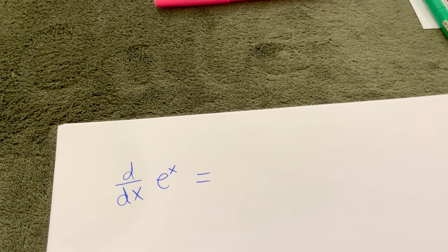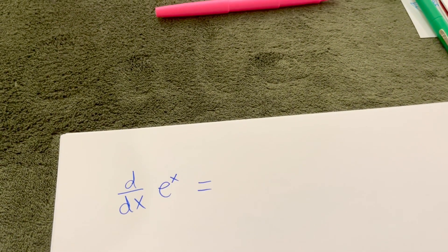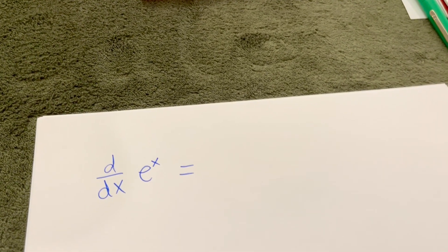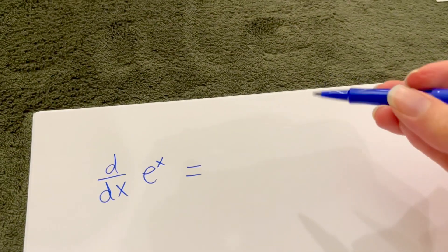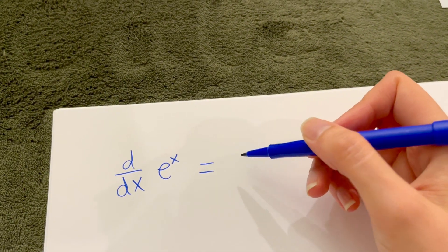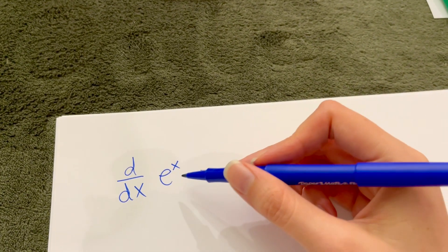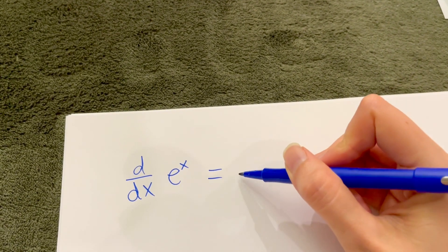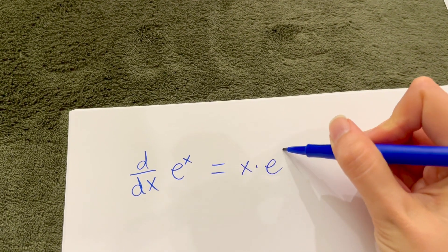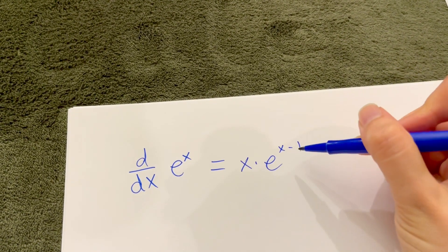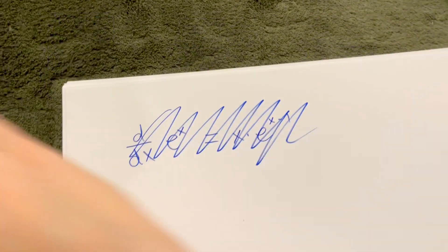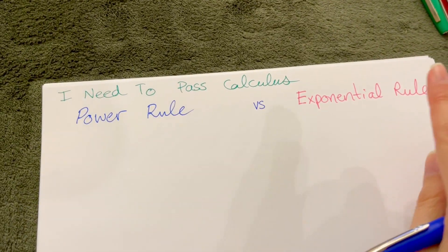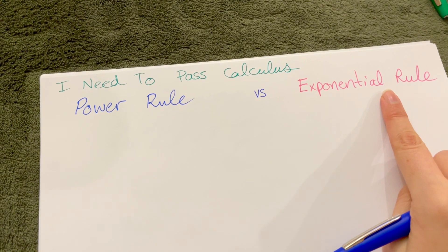Hello, my wonderful calculus adventurers. So, power rule versus exponential rule for derivatives. I see creative variations of the following technique all the time — and it's a mistake. If you try to take a derivative of some sort of exponential function and students start bringing down the exponent and subtracting one from the exponent — no. You've got to keep the power rule and exponential rule for derivatives straight.